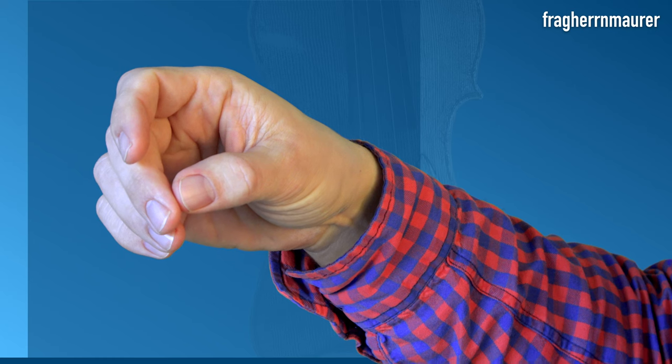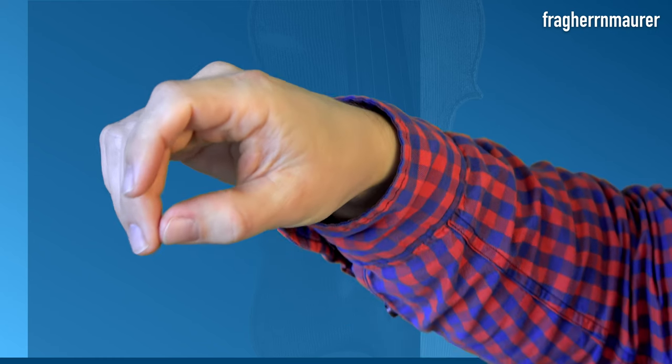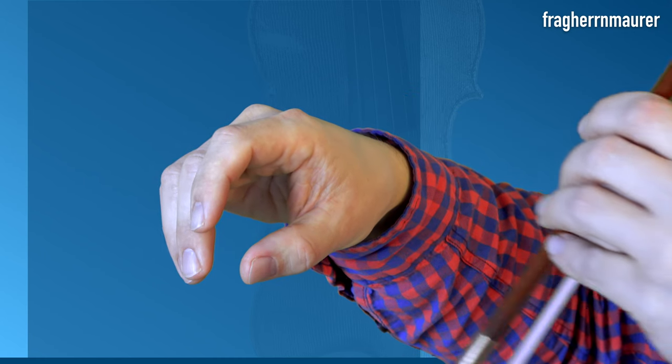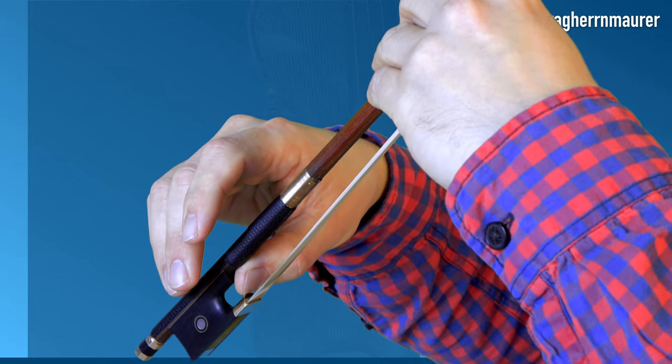Form a circle with your right hand with the tip of your thumb sitting on your second finger. Now move your right hand towards the bow from above, opening your grip slightly in order to grasp the bow.